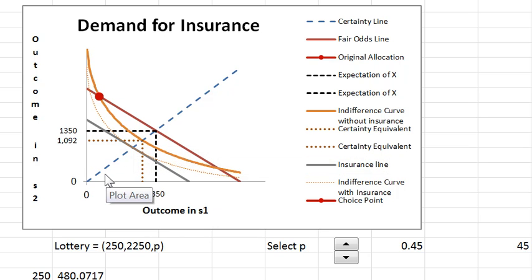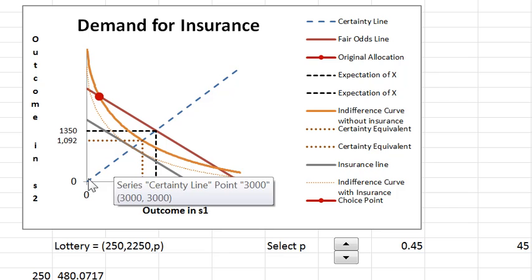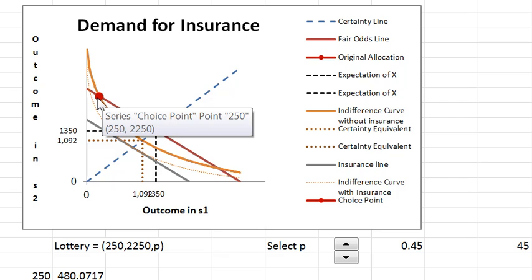We want to now reinterpret the same model that we've looked at as a situation where the consumer is perhaps going to experience a loss with a certain amount of probability. So the good state where there's no loss, the income is $2,250, the loss is $2,000, and in the bad state they have only $250.